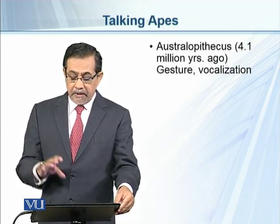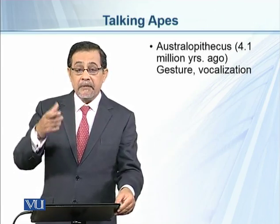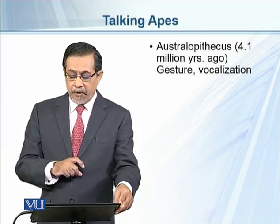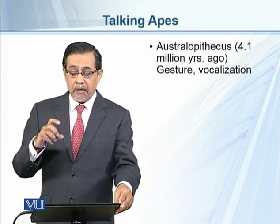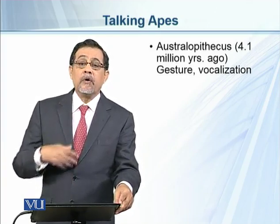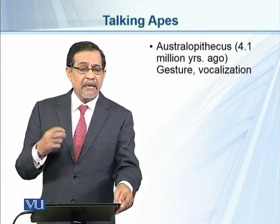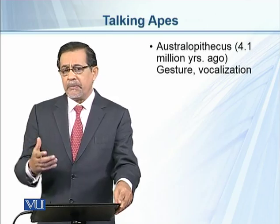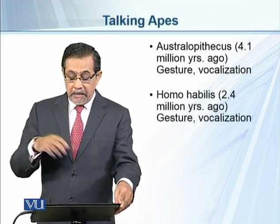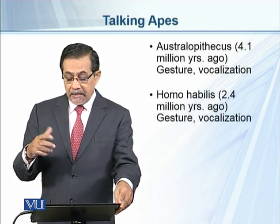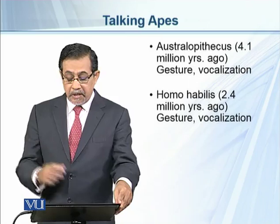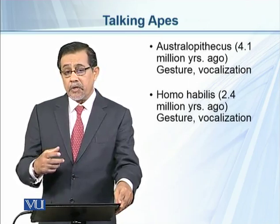Australopithecus, almost 4.1 million years ago, were a further developed form of the apes. They could communicate through gesture or through vocalization, but their vocalization was not comparable to the speech of modern day. Then came Homo habilis, almost 2.4 million years ago, who could also communicate through gestures and vocalization.